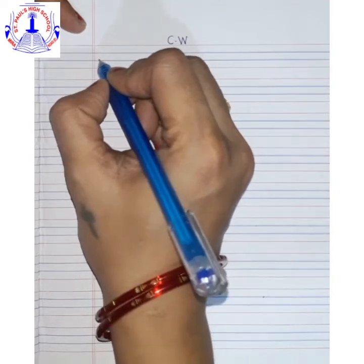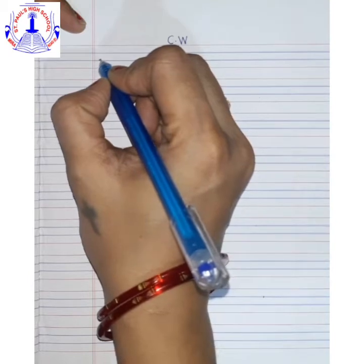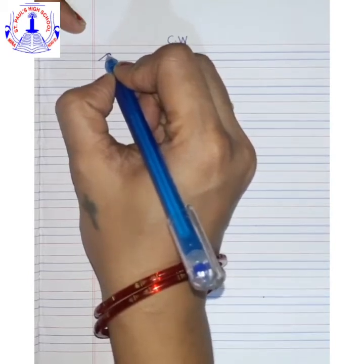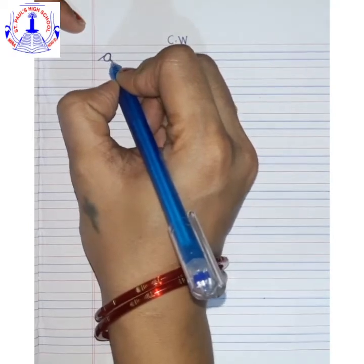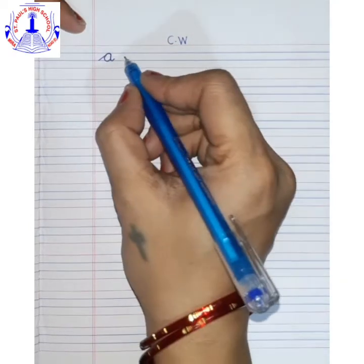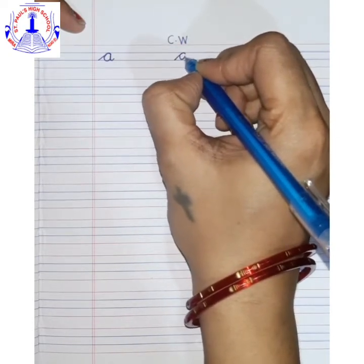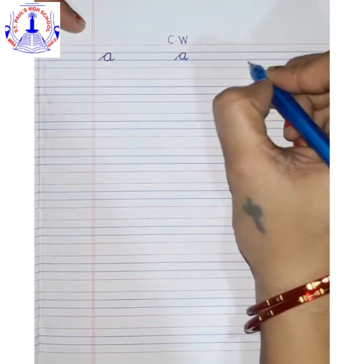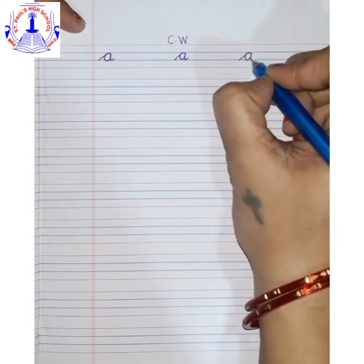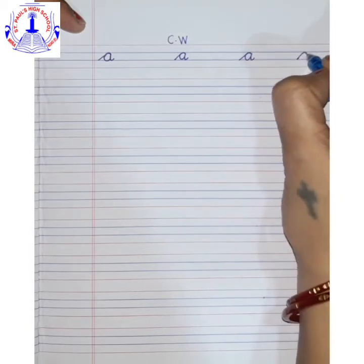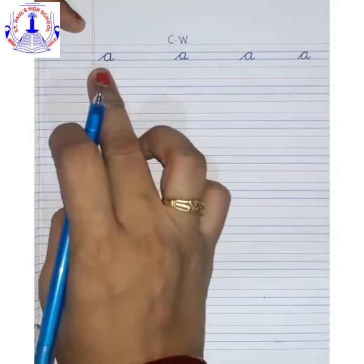First make a slanting line from the second blue line to the first blue line. When you reach there, make a C-like curve, go up, touch and make a tail. We have already learned how to write small letter A. For cursive letter A, we just need to start with a slanting line — see how teacher is writing: slanting line, curve, go up, and then make a tail.